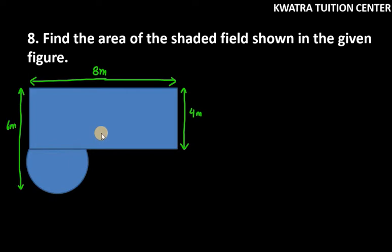Hello everyone, let's start with question number eight. It says find the area of the shaded field shown in the given figure. You can see that this figure has two well-known shapes: one is rectangle, other is semicircle.